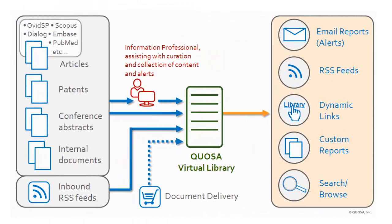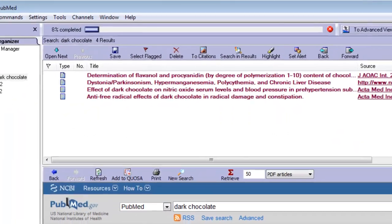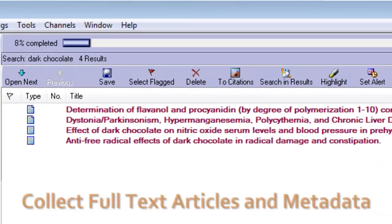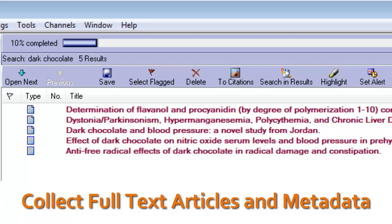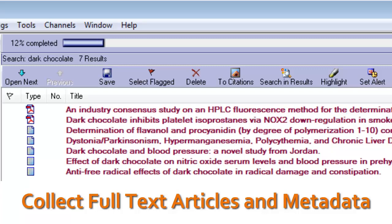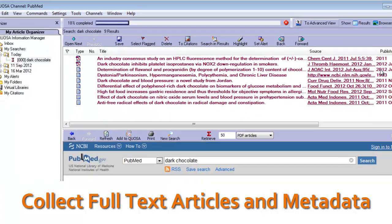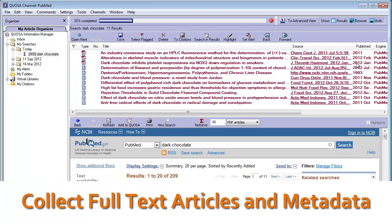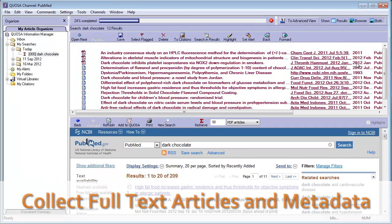Quosa Information Manager is the professional tool to streamline all aspects of your scientific literature workflow. For example, Quosa will help you collect full-text articles and metadata from various sources such as PubMed and other databases automatically, while still interacting with your databases of choice directly.